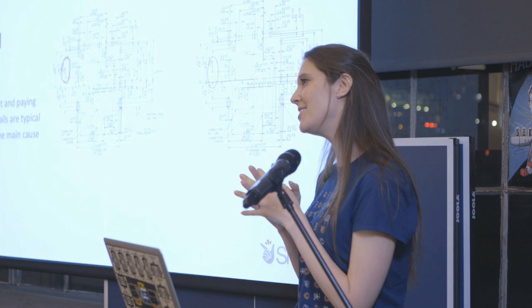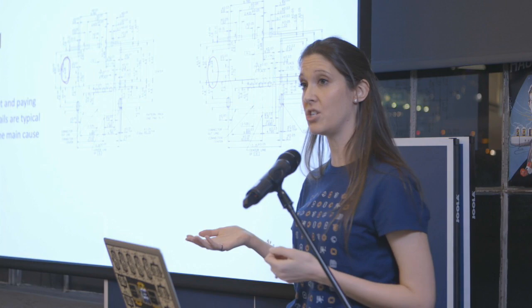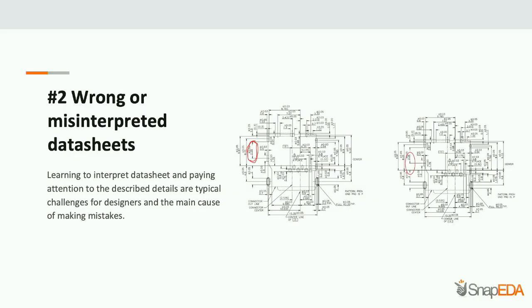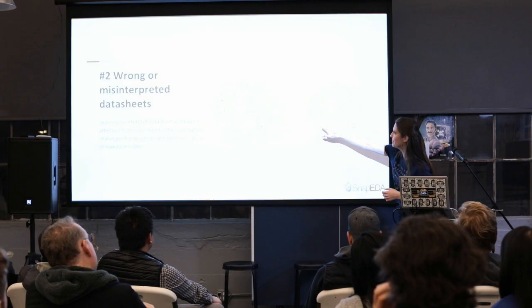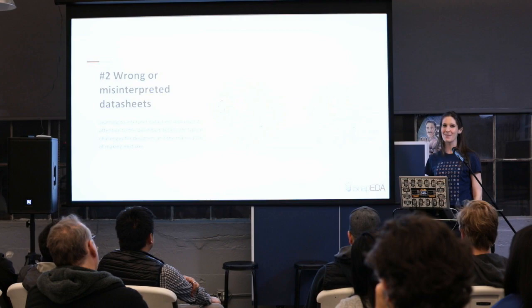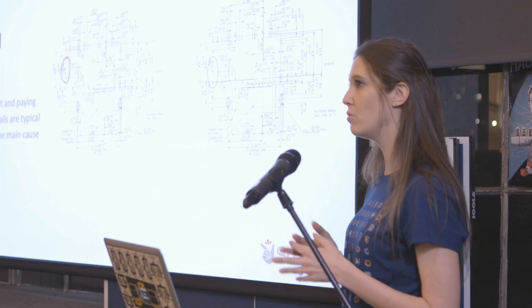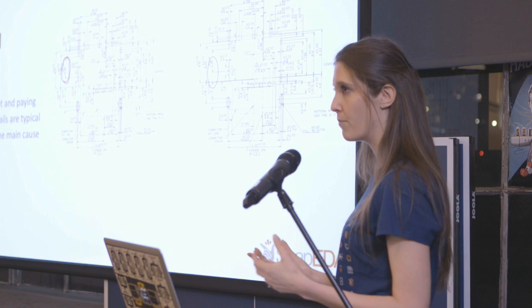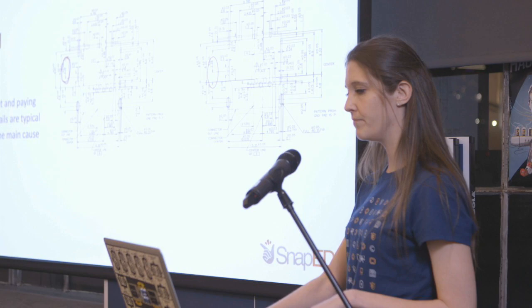Another one is user error in interpreting the data sheet — confusion in how to read a particular dimension. This actually happened on our team recently. A lot of times these drawings are just so detailed that even looking carefully, it's hard to track which arrow relates to which. Data sheet misinterpretation really can get even professional engineers who know exactly what to check. Double-checking, having another engineer in your process verify how dimensions were extracted — it's very important.